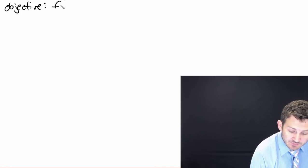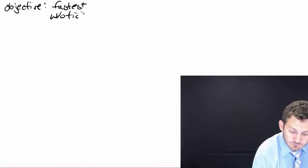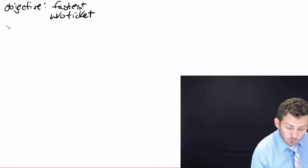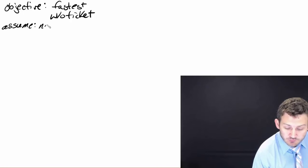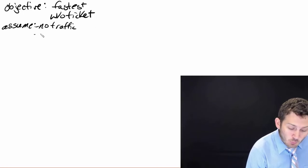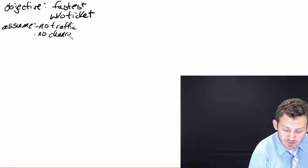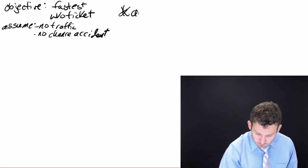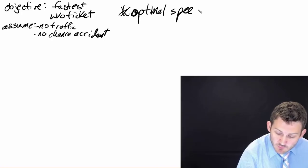Our objective is to get there fastest without a ticket — get there as fast as possible without getting a ticket. We're going to make a couple of assumptions: we're going to assume there is no traffic, because traffic can be variable. With no traffic, we're also going to assume there's no chance of an accident. So the only thing we have to worry about is a police officer pulling us over. We're going to figure out our optimal speed to get from point A to point B, weighing that risk-return relationship.